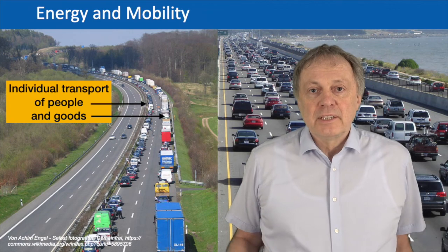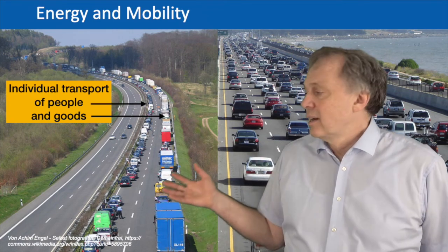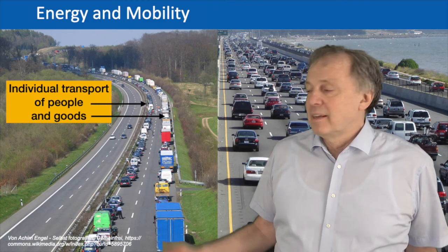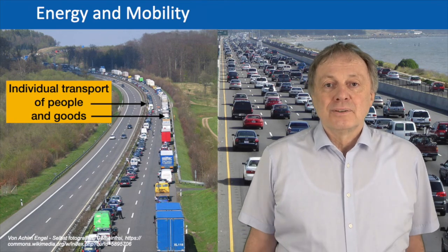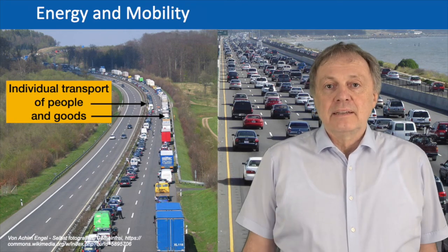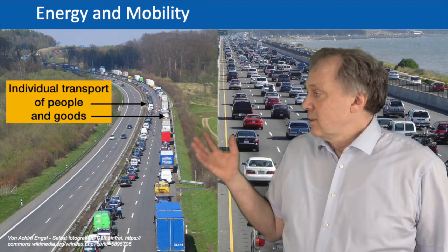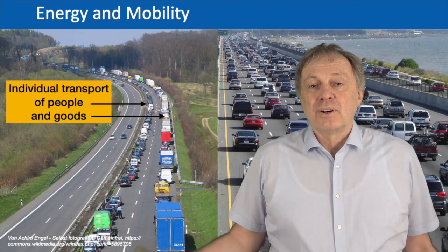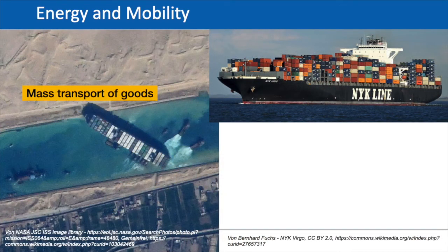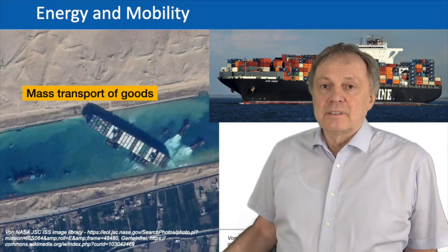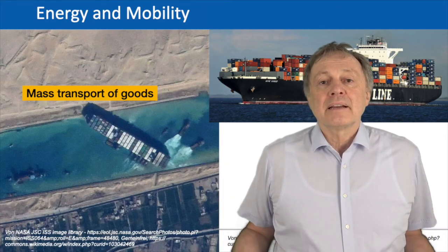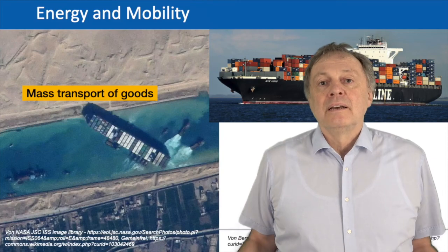On the left picture there's a traffic jam — on the right side is the transport of goods, and on the left side standard cars for transportation of people. Both are growing immensely. A lot of transport of goods over continents is done by big ships. Here you see the accident that happened a few weeks ago when one of the big container ships had a problem in the Suez Canal and blocked it, significantly impacting the world economy.